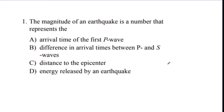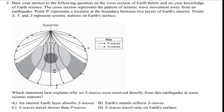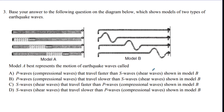Number one: the magnitude of an earthquake is a number that represents its strength or the amount of energy released, measured on the Richter scale — the answer is D. Number two asks why no S waves were received at some seismic stations — the interior of the Earth has a liquid layer which absorbs the S wave. Number three asks which model represents each wave — the P wave looks like a spring (longitudinal/compressional), and the S wave looks like a tidal wave (transverse/shear) — the answer is A.